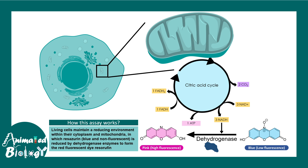This fluorescence can be detected using a proper detector. If fluorescence is detected, that means the cells are viable and the mitochondria are functioning — that's why NADH and dehydrogenase enzymes are properly able to convert the dye into a fluorescent form.